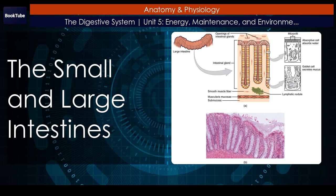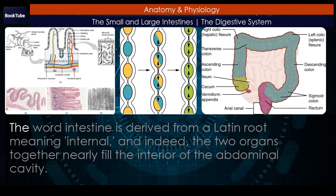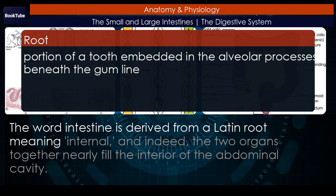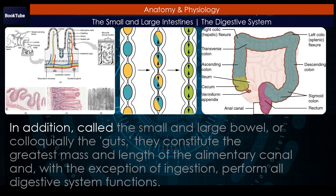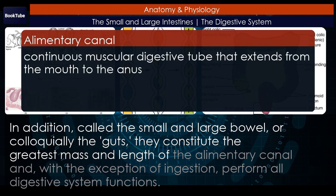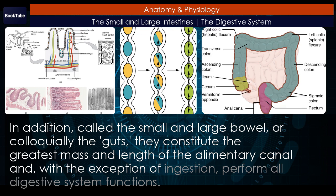The small and large intestines. The word intestine is derived from a Latin root meaning internal, and indeed, the two organs together nearly fill the interior of the abdominal cavity. Also called the small and large bowel, or colloquially the guts, they constitute the greatest mass and length of the alimentary canal and, with the exception of ingestion, perform all digestive system functions.